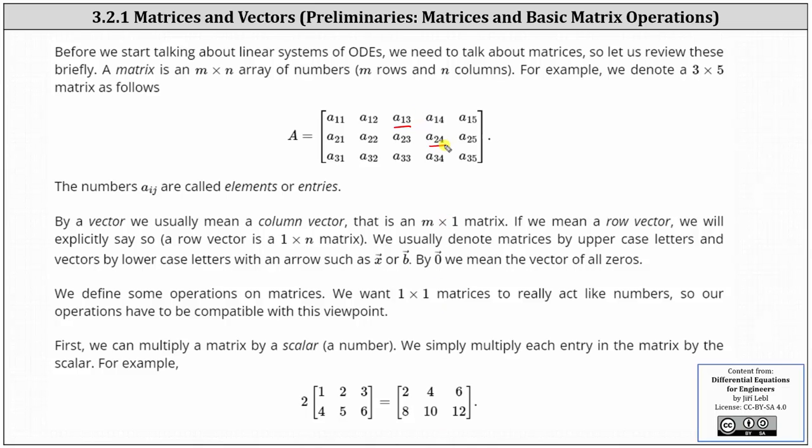A_24 is the element in row two, column four, and A_32 is the element in row three, column two. Sometimes you will also see commas between i and j.